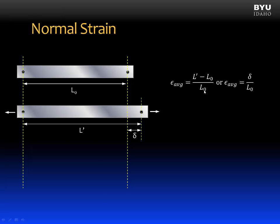So normal strain is a ratio of the change in length over original length. Another way to look at this is the average strain is equal to this delta, that's the change, divided by the original length.